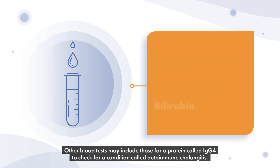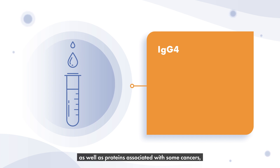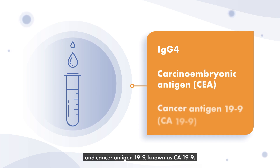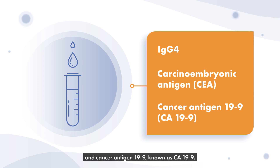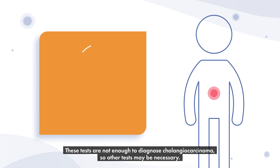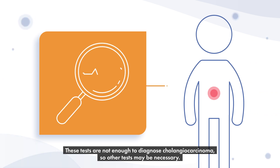Other blood tests may include those for a protein called IgG4 to check for a condition called autoimmune cholangitis, as well as proteins associated with some cancers, such as carcinoembryonic antigen (CEA) and cancer antigen 19-9 (CA19-9). These tests are not enough to diagnose cholangiocarcinoma, so other tests may be necessary.